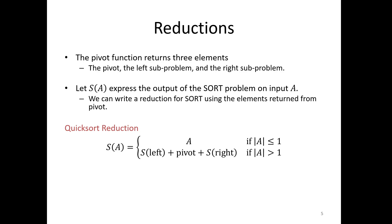Welcome back. In this video I want to continue talking about the quicksort algorithm. In the last video we did a quick introduction to the pivot operation. Now I want to look at the self-reduction related to quicksort. To do this, let's remind ourselves how these self-reductions work. I've set up a simple formula here: S of A, which we can think of as a function representing the output of our sort problem on input A. The output to the main problem S of A can be written with reference to some sub-problems. The sub-problems in quicksort are a little more complicated than the ones in merge sort or binary search.